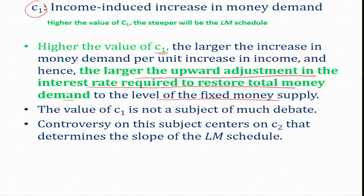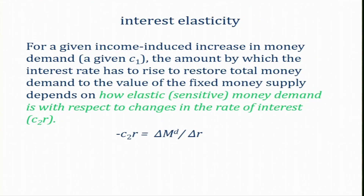The value of c1 is not subject to much debate; the controversy centers on c2, which determines the slope of the LM schedule. For a given income-induced increase in money demand, the amount by which the interest rate must rise to restore total money demand to the value of fixed money supply also depends on how elastic or sensitive money demand is with respect to changes in the rate of interest — that is c2.